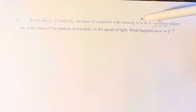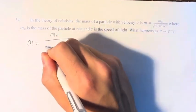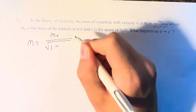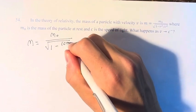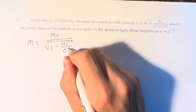We're asked what happens as v approaches the speed of light c from the left. So we have our function m = m₀ over the square root of 1 minus, then we're approaching c from the left squared over c squared.